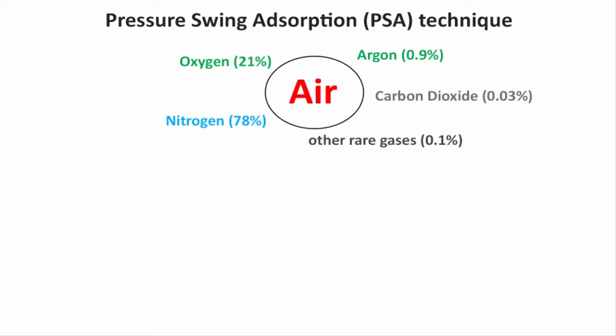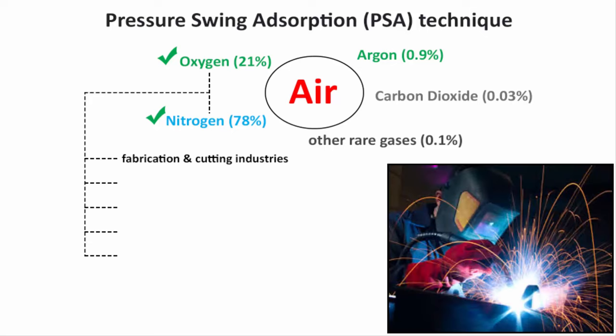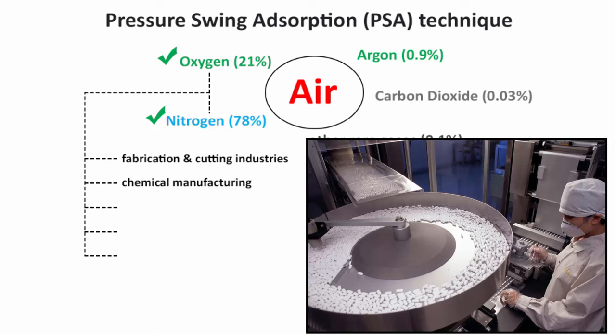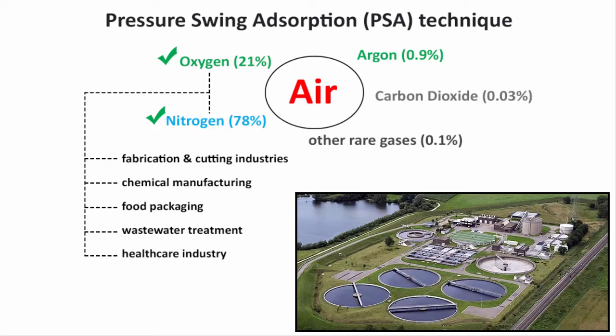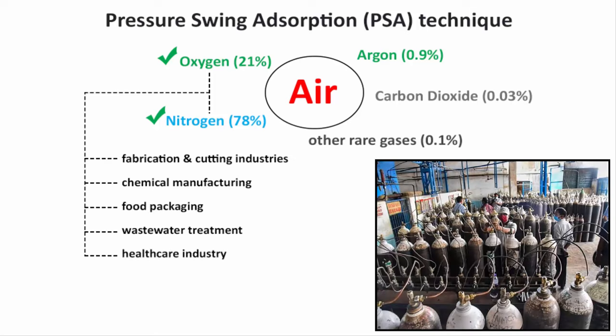This technology can be used to separate nitrogen and oxygen gas, which are used for various industrial applications like fabrication and cutting industries, chemical manufacturing, food packaging, wastewater treatment, and the healthcare industry.